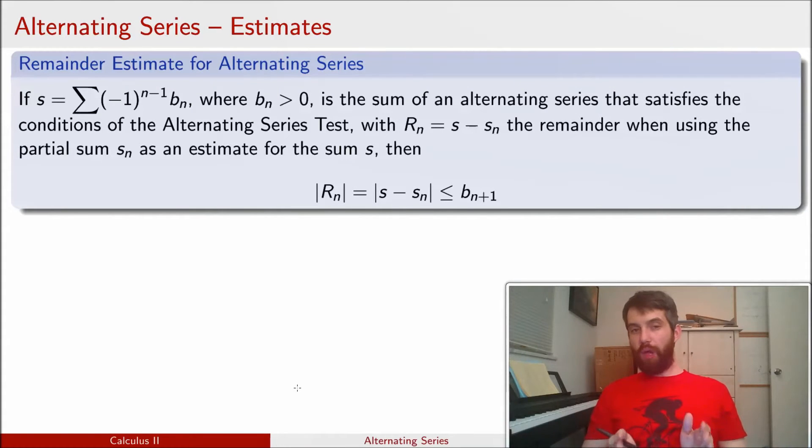As we've noted before, it is often the case that we actually can't compute the exact value of a series. We might be able to argue that it converges, but we don't know what it converges to. And so what we're usually interested in is coming up with some sort of estimate on the remainder. We might know that for whatever application we have, there's some uncertainty, and as long as we're less than that uncertainty, then we're going to be okay.